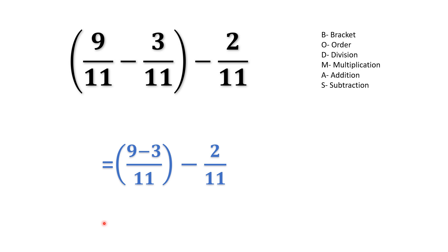So 9 over 11 minus 3 over 11 will be calculated first inside the bracket, but here we do not need to do LCM or anything. Why? Because these two are like fractions, that means the denominator for both are same. So if you see the denominator is the same, you will not need to do the LCM and then divide and multiply.